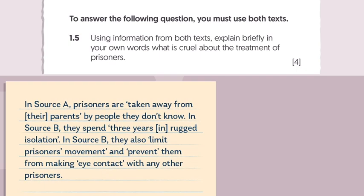In Source A, prisoners are taken away from their parents by people they don't know. In Source B, they spend three years in rugged isolation. In Source B, they also limit prisoners' movement and prevent them from making eye contact with any other prisoners.